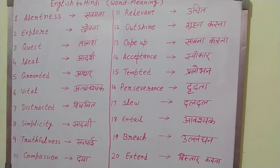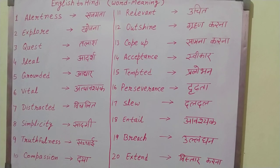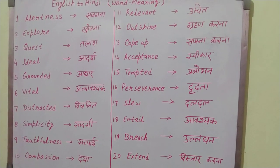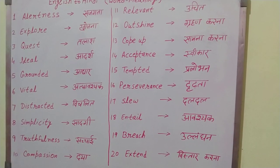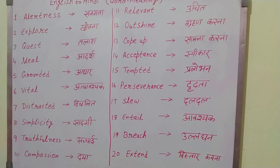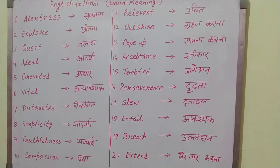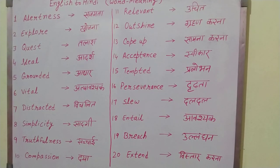Number 9: Truthfulness — Satchayiv. Number 10: Compassion — Daya. Number 11: Relevant — Uchit. Number 12: Outshine — Gurhan karna.